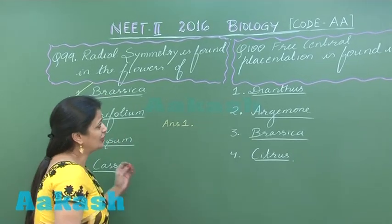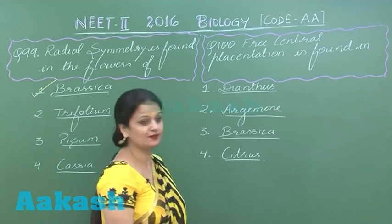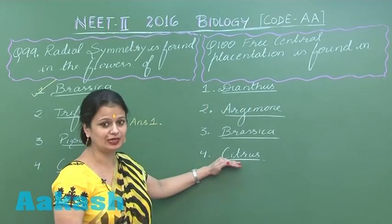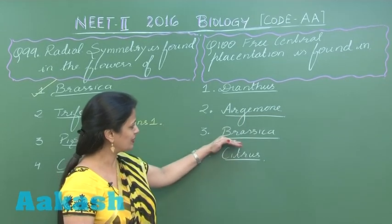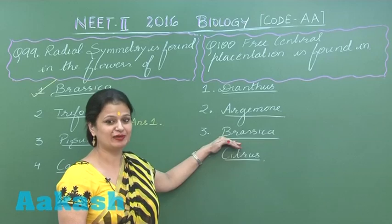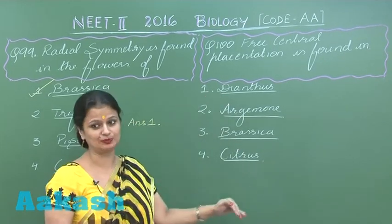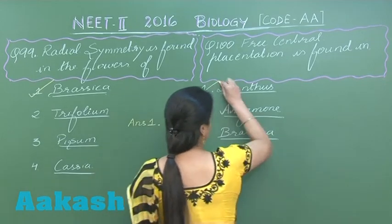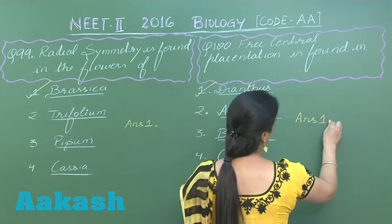Question 100: Free central placentation is found in which plant? In Citrus, axile placentation is present. In Argemone and Brassica, both Brassicaceae, parietal placentation is present. Dianthus has free central placentation. So the right option is answer number one.